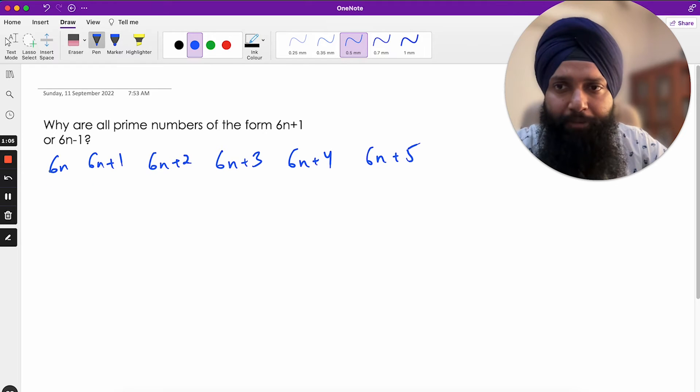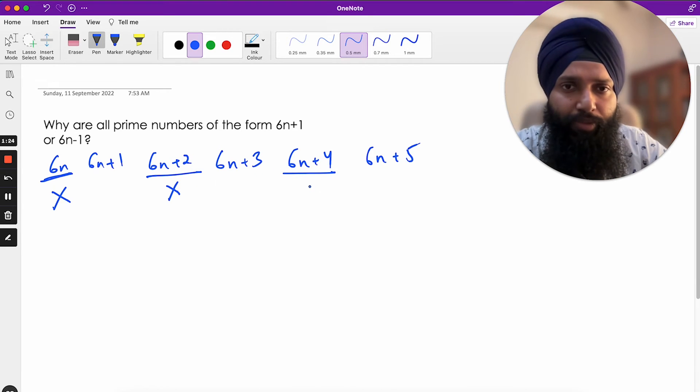Now, can this be a prime number? No, this is already a multiple of 6. Can this be a prime number? No, it is already divisible by 2. Both the numbers are divisible by 2, so it's definitely divisible by 2, it cannot be a prime number. Can this be a prime number? Again, this is also divisible by 2, it's an even number.